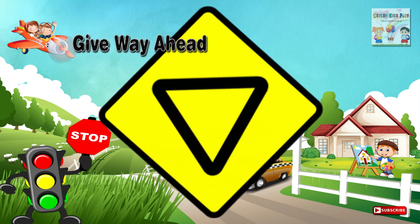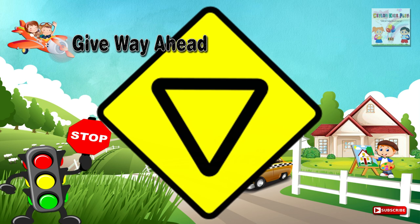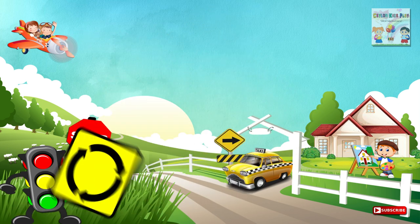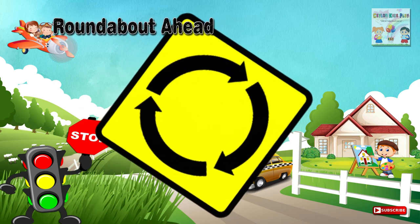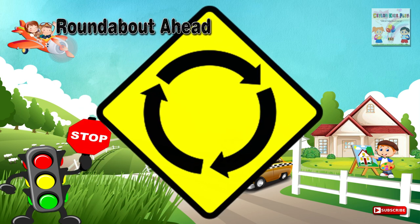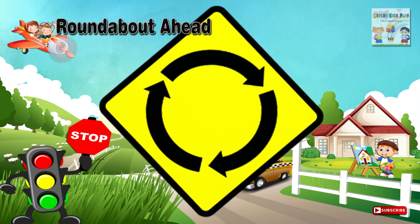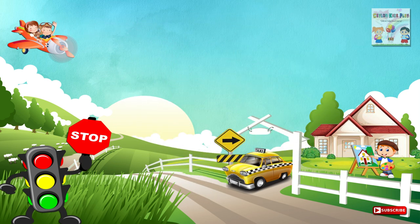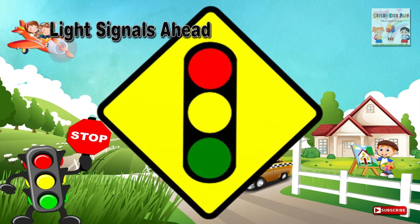Twenty-four: Give way ahead — a place on a road ahead where traffic has to give way to traffic on the major road it intersects or meets before entering the junction, according to Regulation 10. Twenty-five: Roundabout ahead — a place ahead where two or more roads intersect with a circular center island in the middle, and traffic has to move round the center island in a clockwise direction.